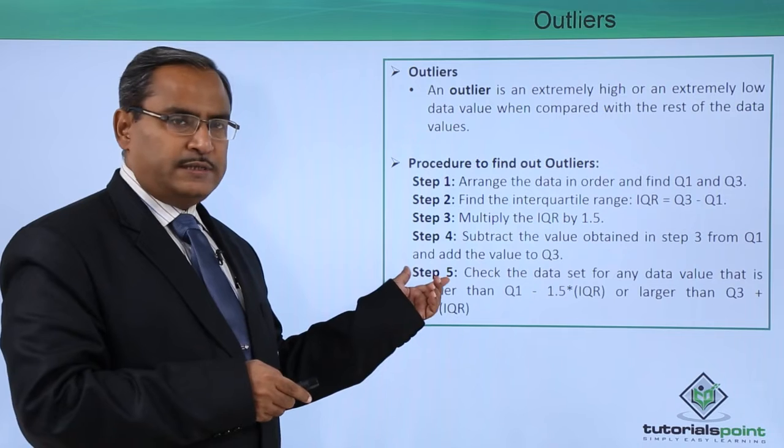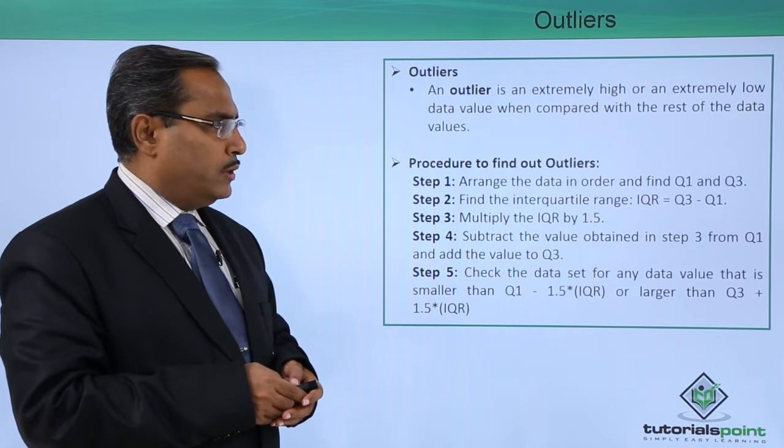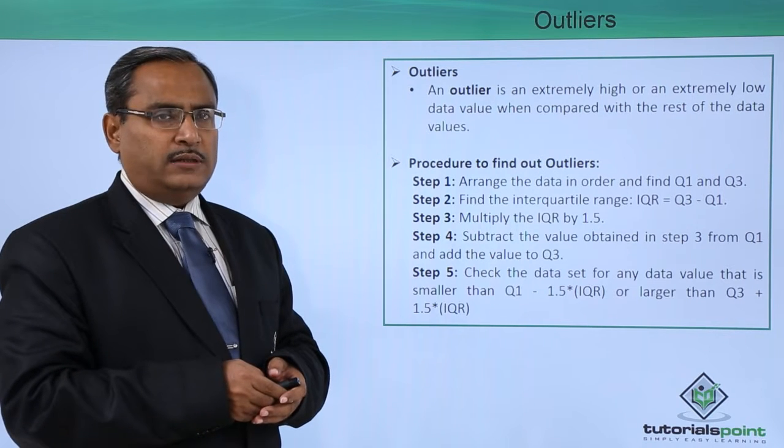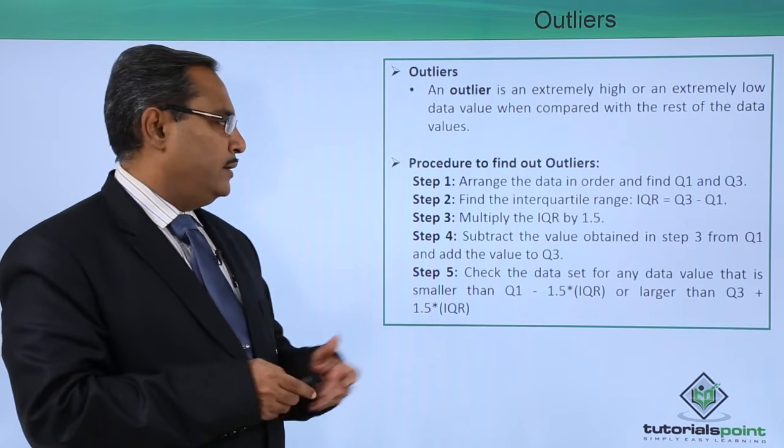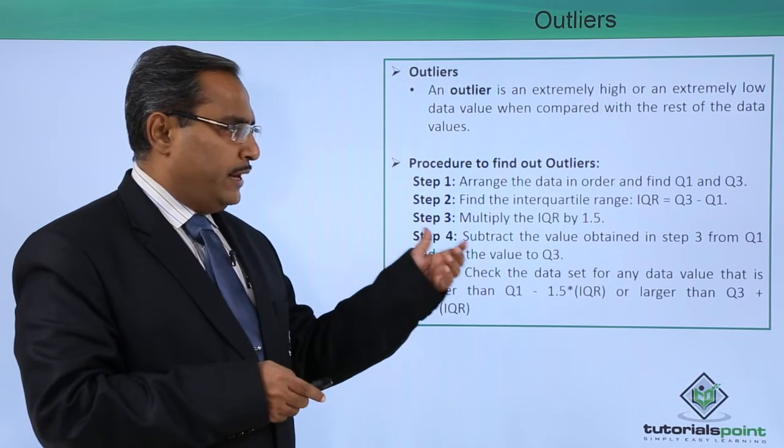Procedure to find outliers: here we are having five different steps. Step 1: Arrange the data in order and find Q1 and Q3. Q1 and Q3 are the first and the third quartile.